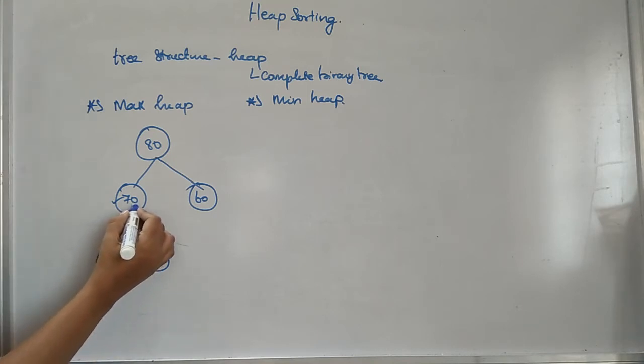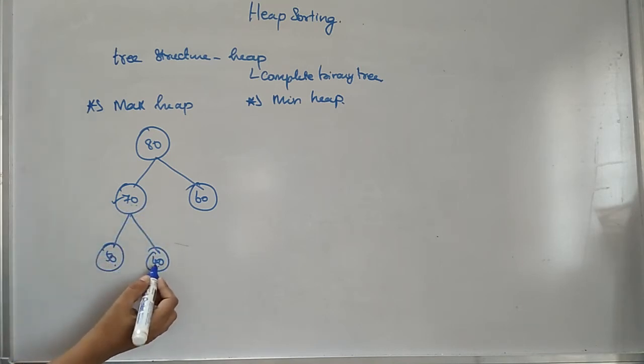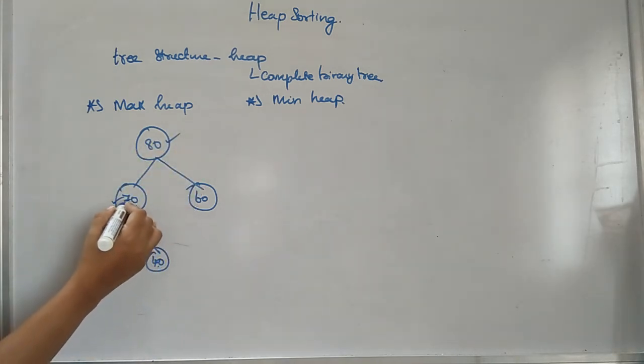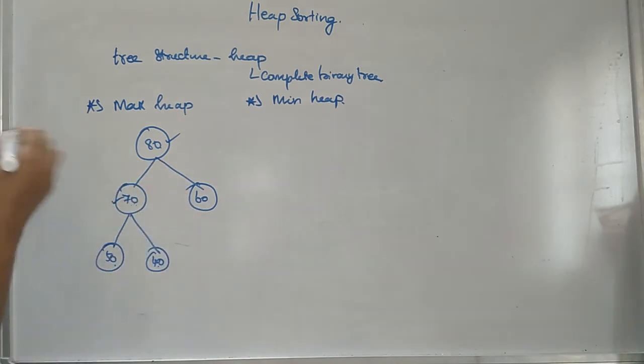So because 70 is greater than 50 and 40. And in the same way, if you are taking this node, 80 is greater than its children, 70 and 60. That's why it is called a max heap.